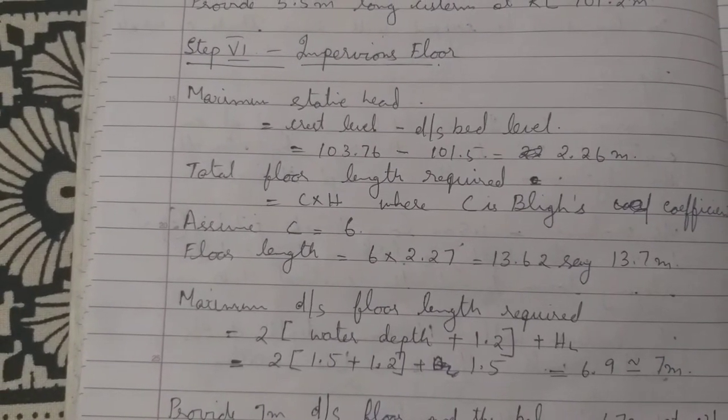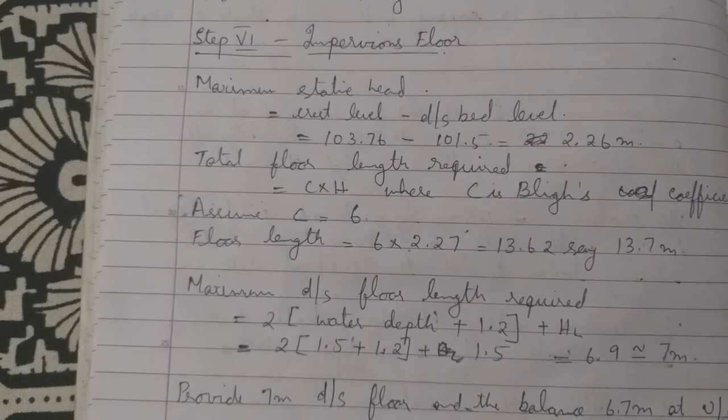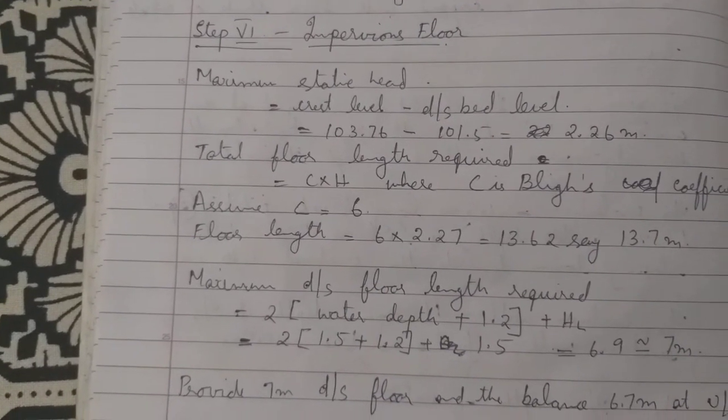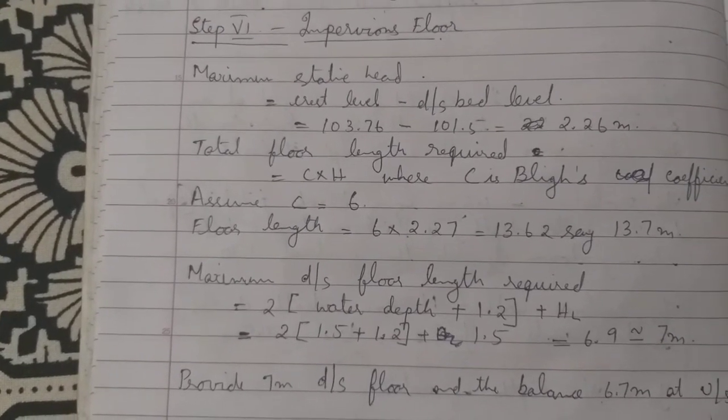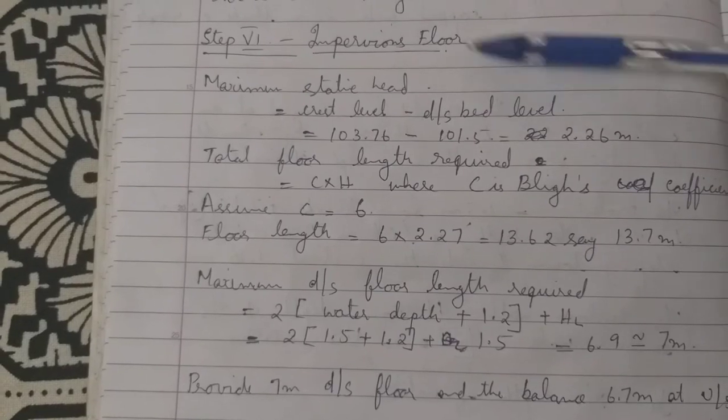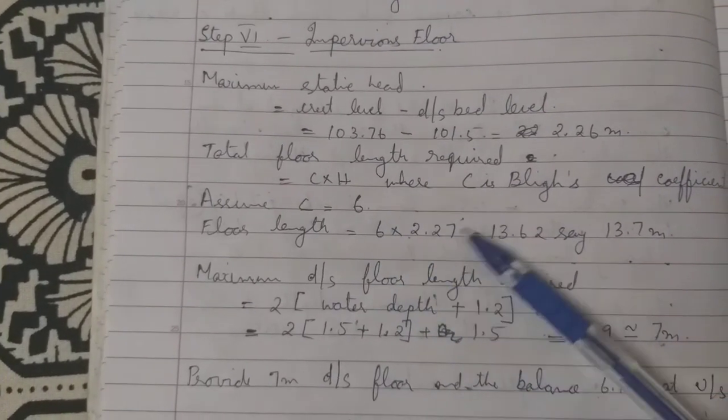Design of impervious floor: maximum static head is equal to crest level minus downstream bed level, which equals 103.76 minus 101.5, equal to 2.26. Total floor length required is equal to c into h, where c is the Blize coefficient.